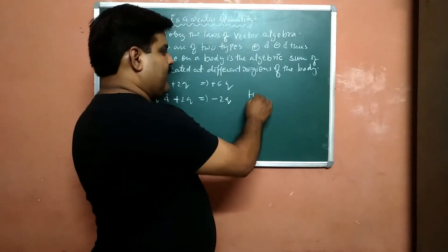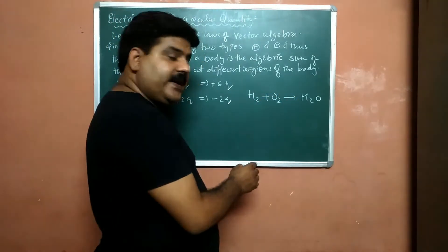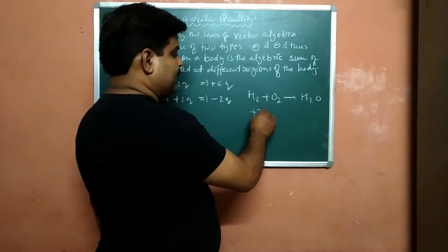In chemistry, if two things are there and they are added, you will definitely get a third thing. But in mathematics, when two, three things are added.